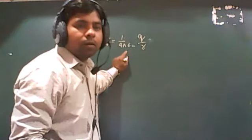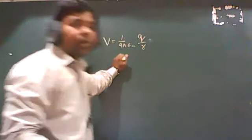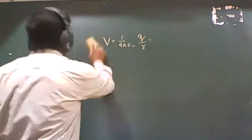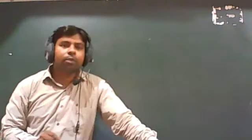As we have revised the first chapter, we had studied that the electric field due to a point charge is equal to 1 upon 4 pi epsilon naught Q upon R squared. We have studied the electric field due to the dipole at the axial position, at the equatorial position, and at any point.